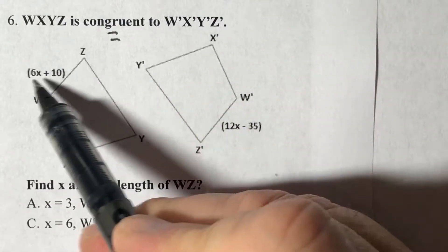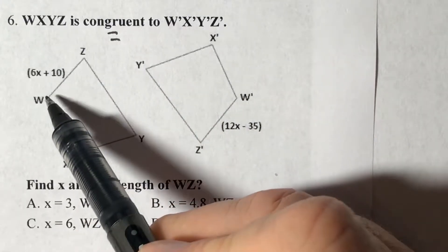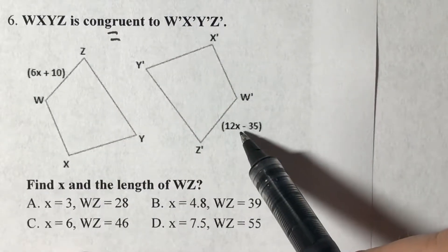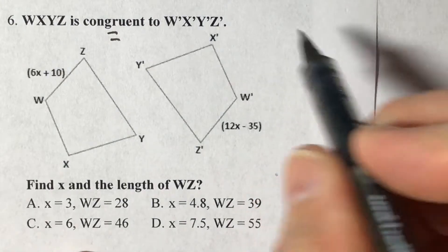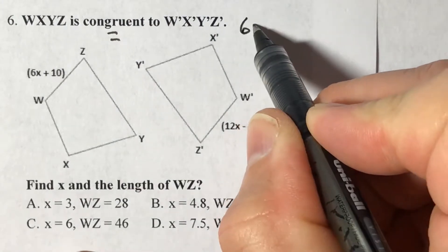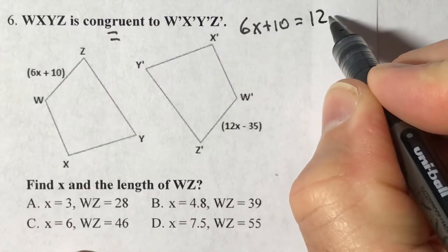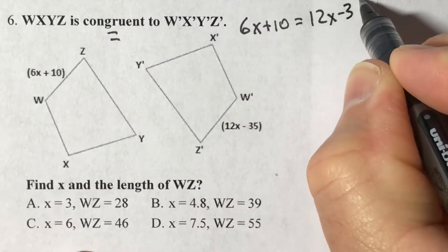WZ is what's given, that's the reason why I went to WZ and W'Z' is my other part that I'm going to set equal. So 6X plus 10 equals 12X minus 35.